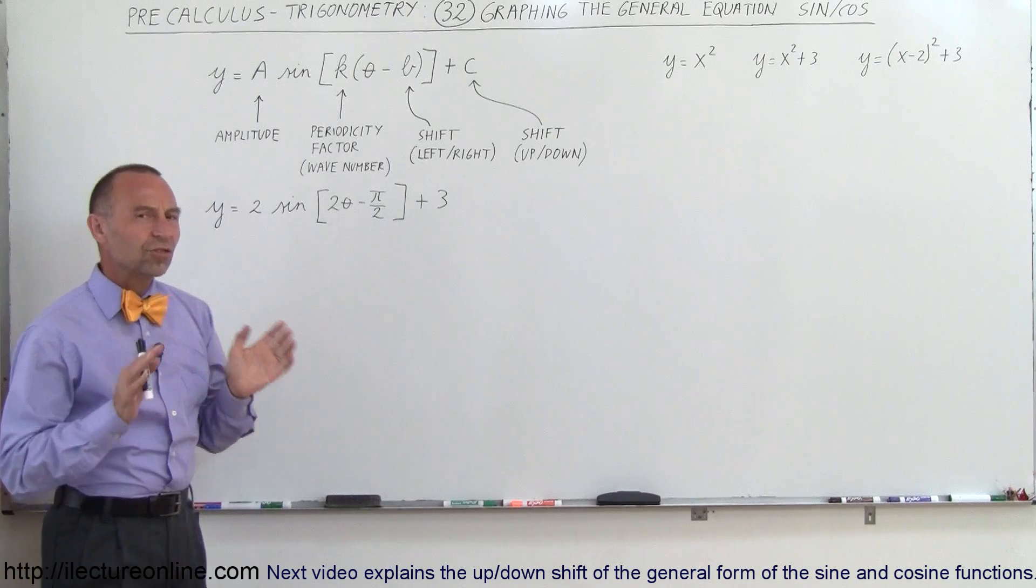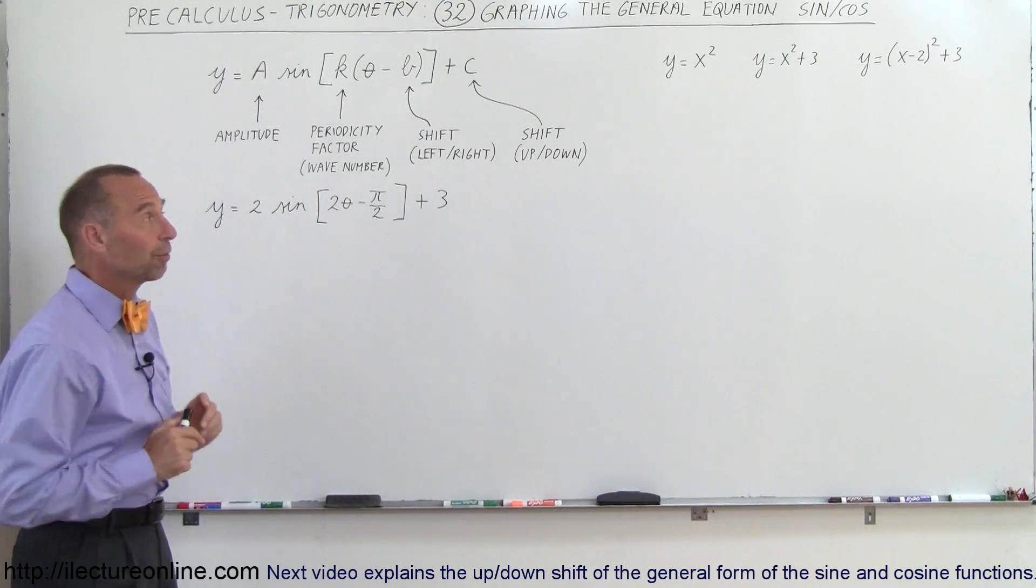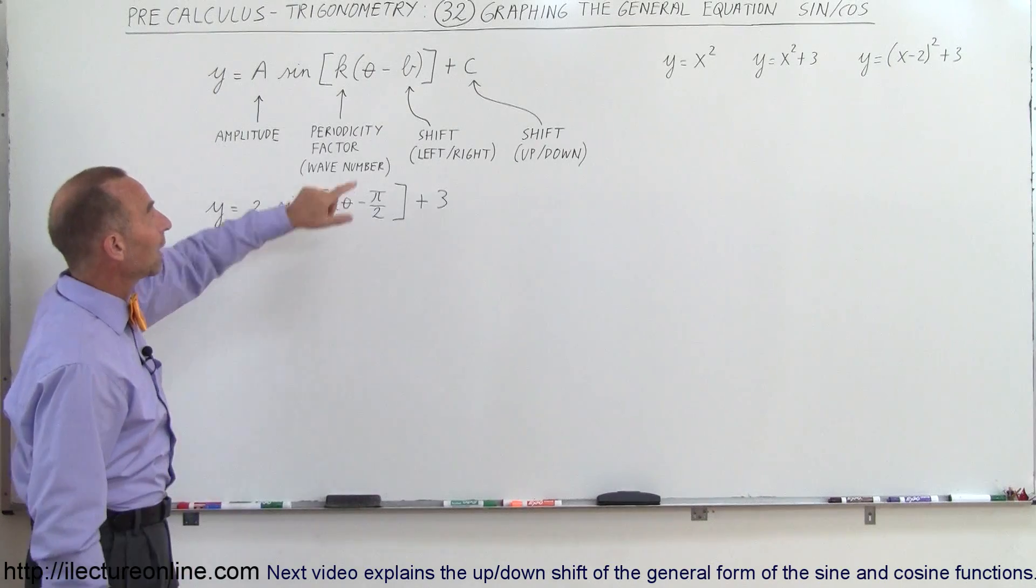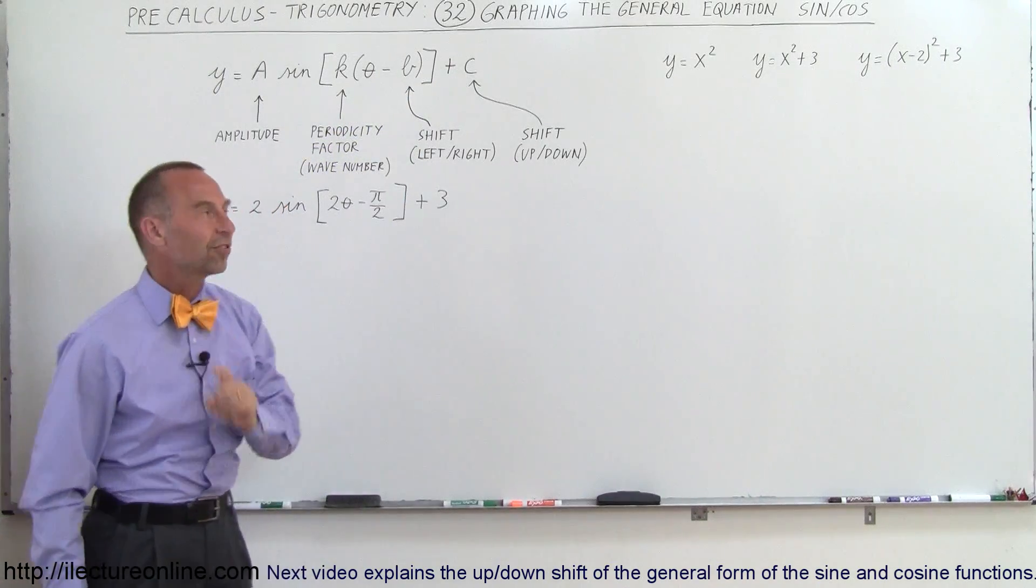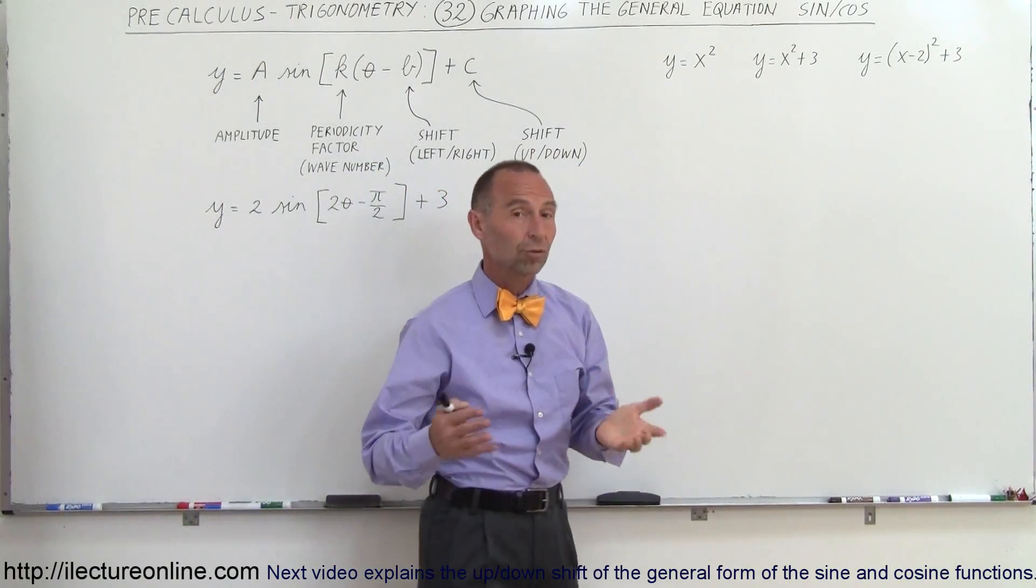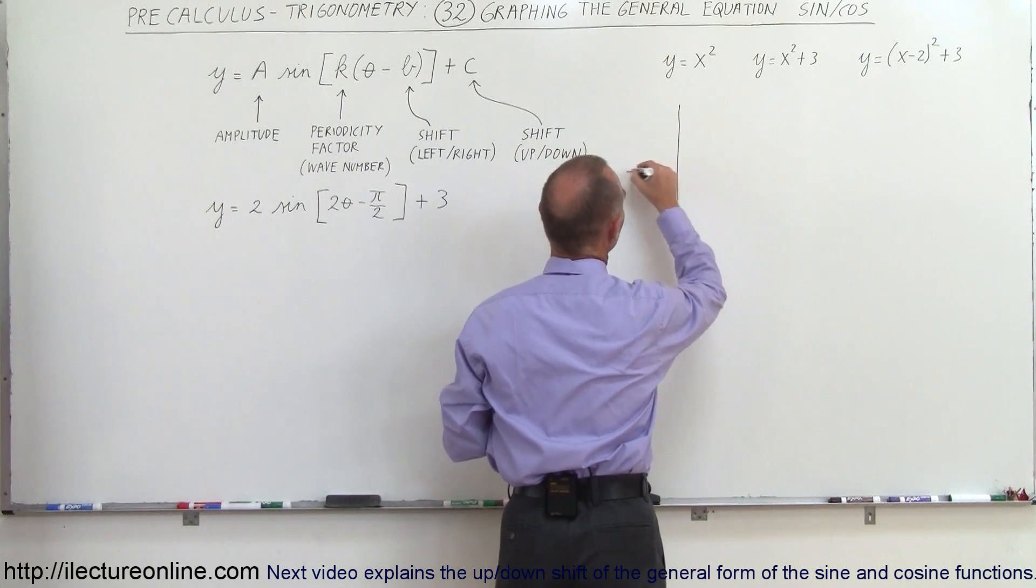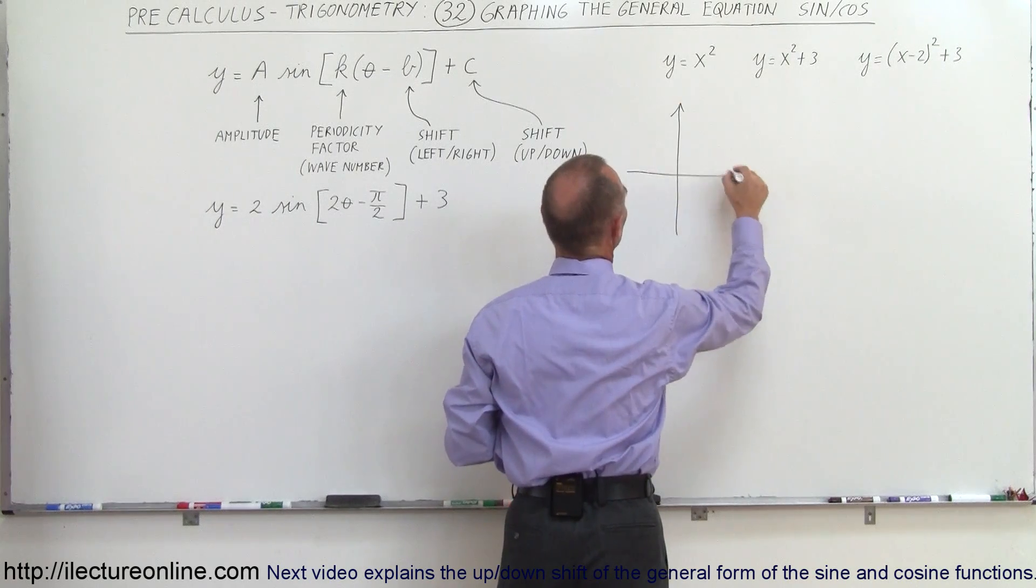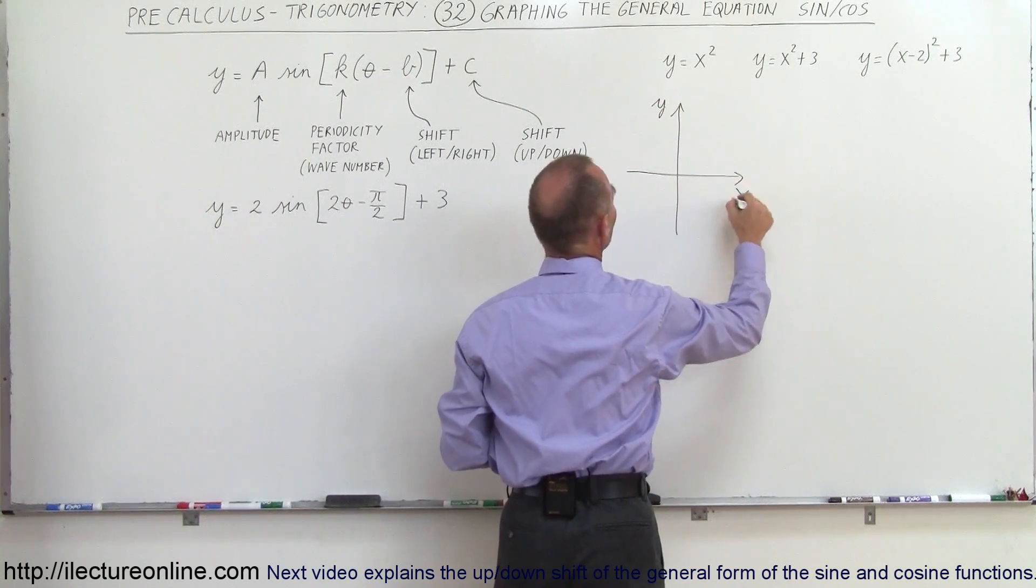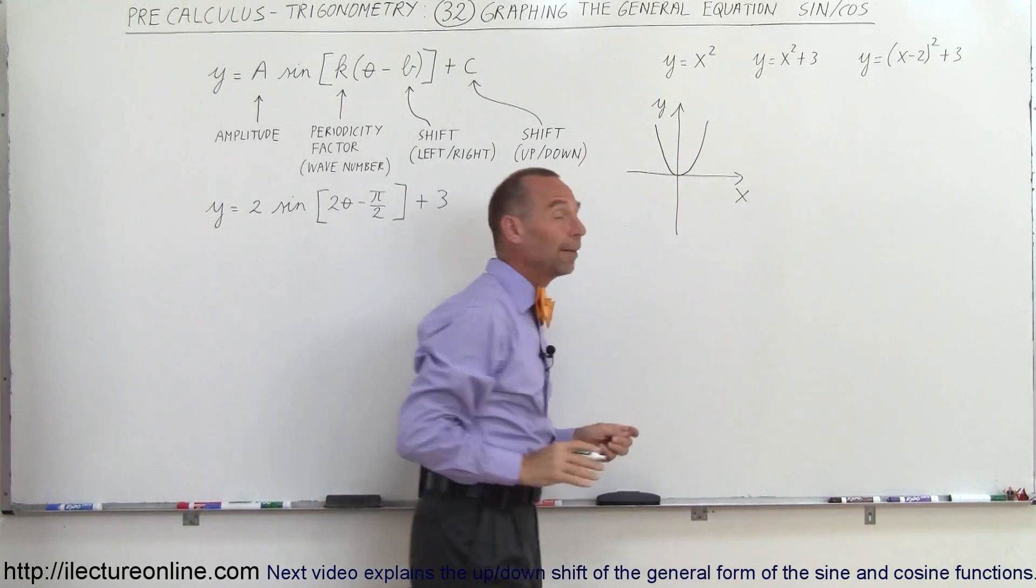So in order to understand what that actually means we're going to go back to something probably a little bit more familiar with, at least to show you how the shifts left and right and shifts up and down work. For example, let's say someone gave you the equation y equals x squared and asked you to graph that. Most of you would say that's not a problem. I can simply put a y, x, y axis down, so this would be the y axis, this would be the x axis, and y equals x squared parabola would look something like that.